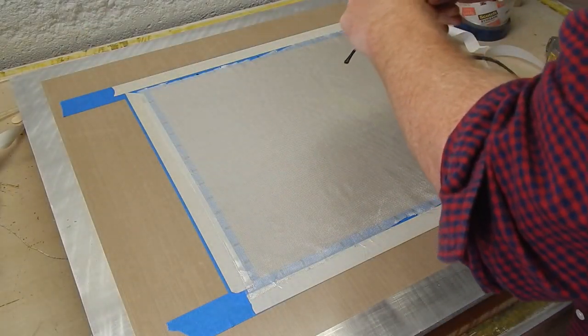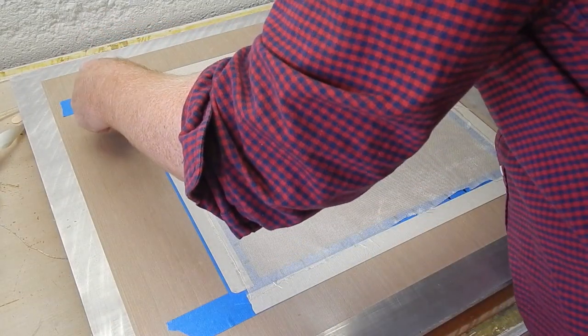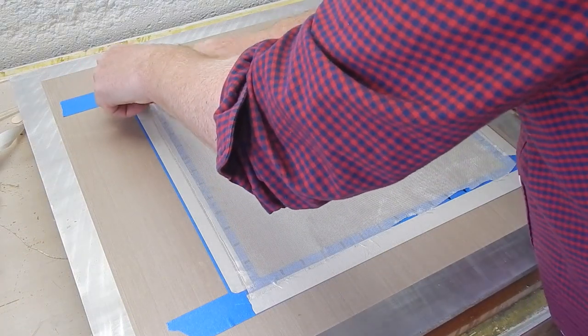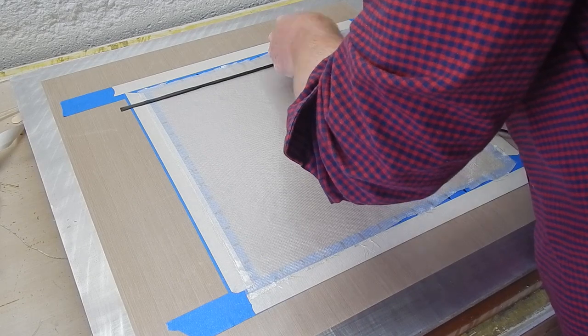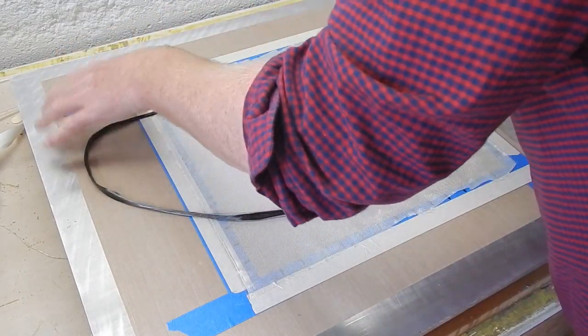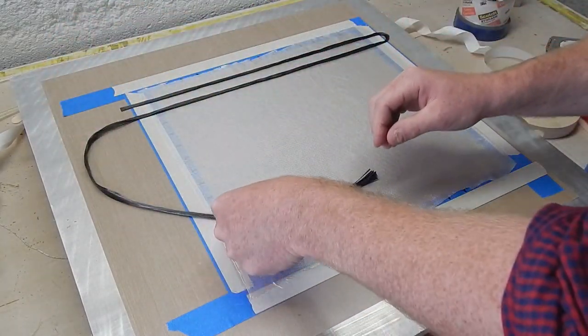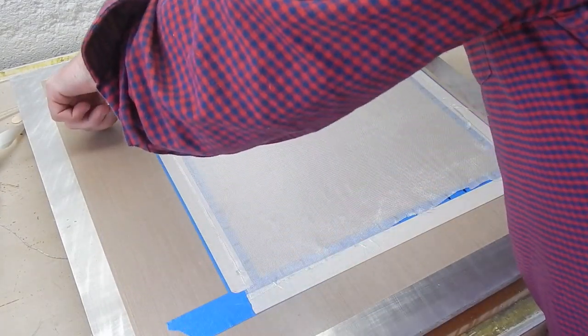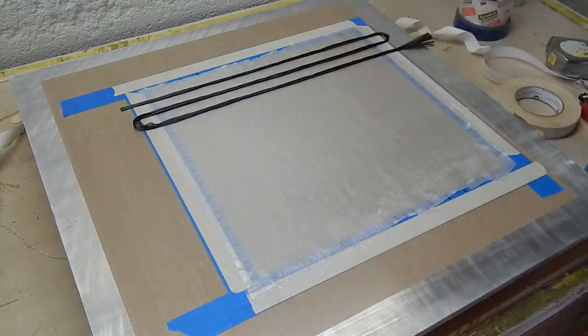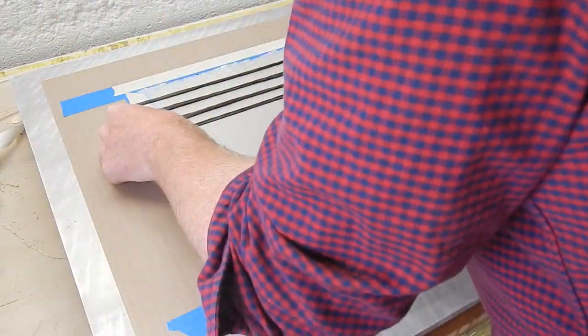Here's the first carbon tow going across, trying to keep it under some tension and do it as neatly as possible. What I probably should have done is just cut a bunch to the right length instead of trying to loop them around like this. But I was trying to save myself trouble. As always, you learn how to do it while you're doing it with stuff like this.